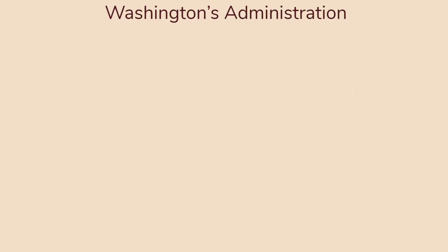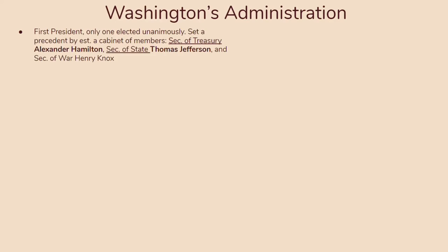Let's talk about George Washington's administration. The country has just been formed and Washington is placed as president. He is the first president and the only one to be elected unanimously, meaning everyone agreed he should be president. As commander-in-chief of the Continental Army, he proved he was a good leader. He sets many precedents during his time in office — for example, he established a cabinet including Alexander Hamilton as Secretary of the Treasury, Thomas Jefferson as Secretary of State, and Henry Knox as Secretary of War.